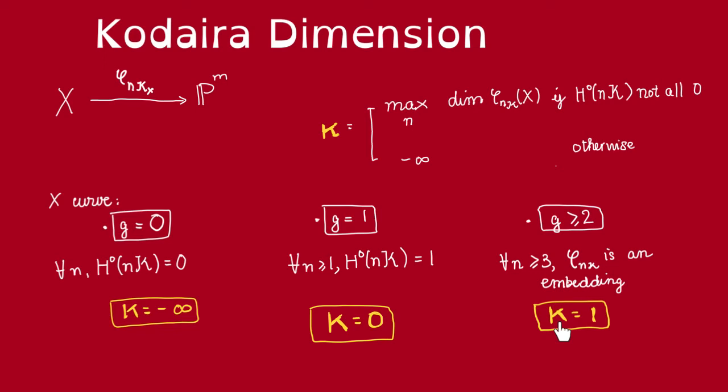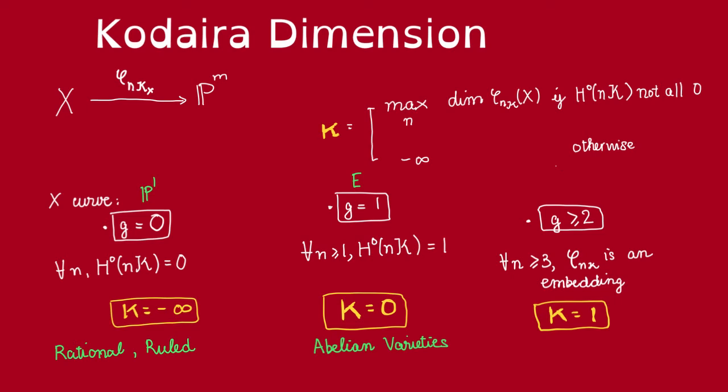And observe that curves of genus 0, which are all isomorphic to P1. And surfaces of Kodaira dimension minus infinity are going to be generalizations of P1. So, they include rational surfaces and ruled surfaces. Curves of genus 1 are elliptic curves, and these are abelian varieties in dimension 1.